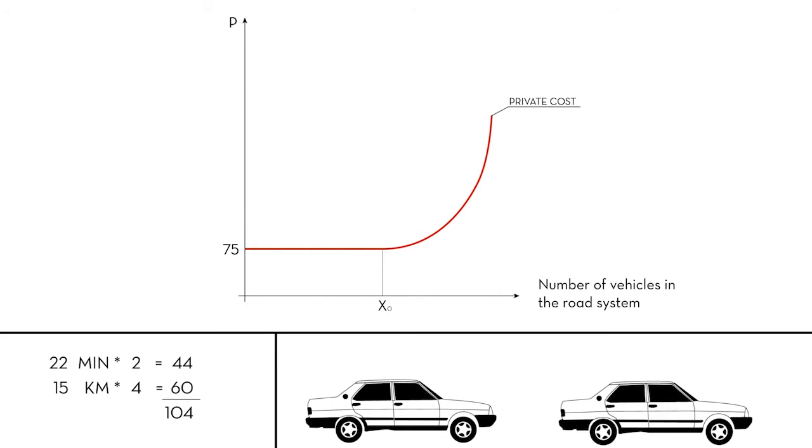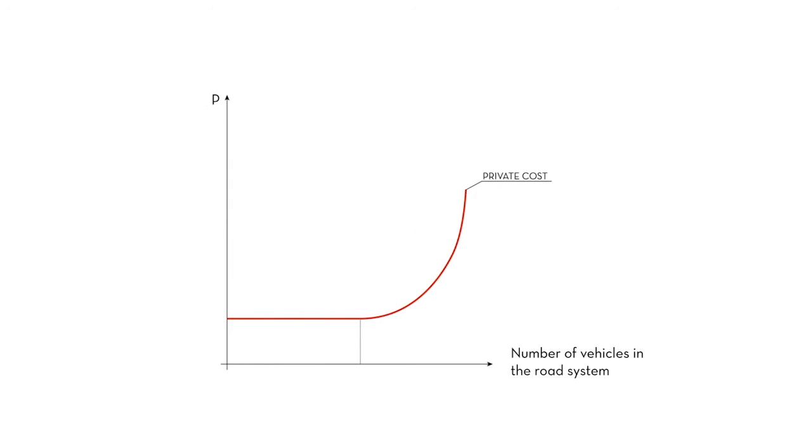The driver of each new car entering into the road will have to bear his own private cost for doing so. But after the capacity limit of the road system has been reached, it will also marginally slow down all other cars in the system. Therefore, the social marginal cost for adding one more car in the road system will be equal to private cost plus the extra time and driving costs that the marginal entrance imposes on the other cars in the road system.